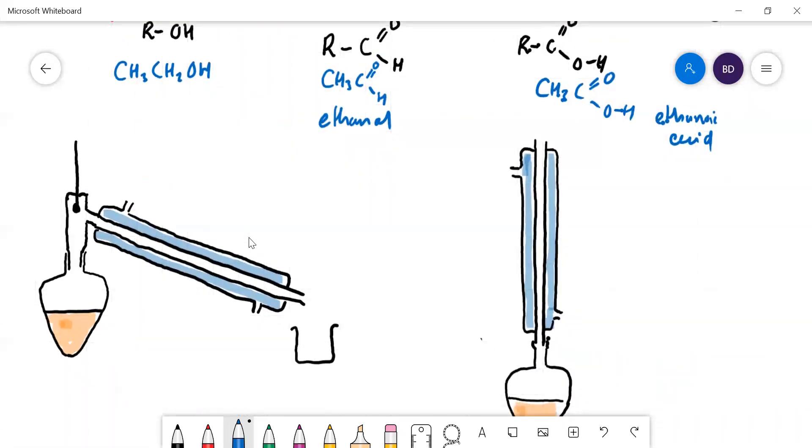What we've got here is a pear-shaped flask. You'd put in some anti-bumping granules and you'd put your ethanol and your potassium dichromate in there, which I've drawn orange. You'd have to acidify it and you'll heat it. As you heat it, the oxidation is going to happen.